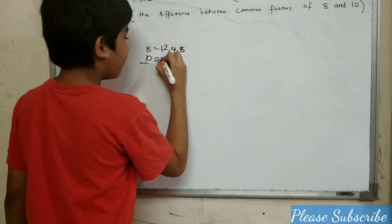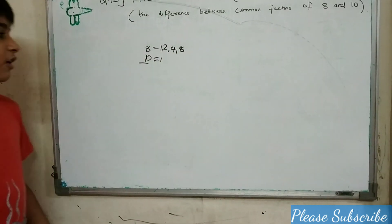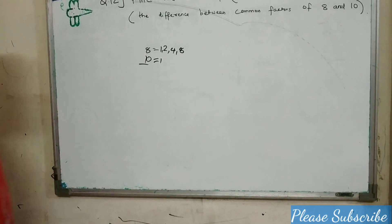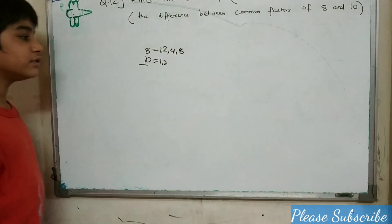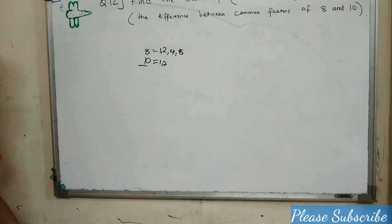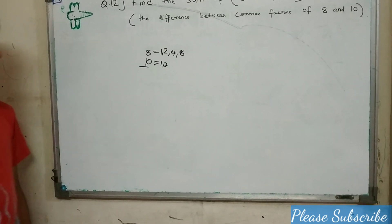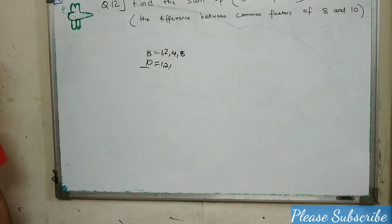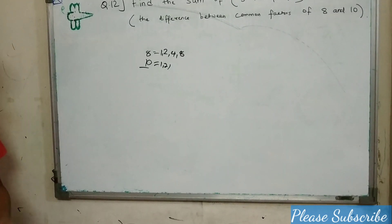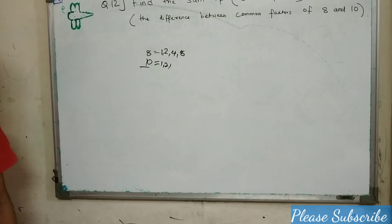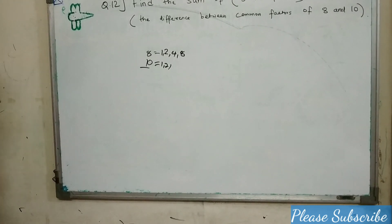1 is a factor of 10 because all numbers are divisible by 1. 2 is also a factor of 10 because 2 times 5 is 10. 3 is not a factor of 10 because 3 doesn't come in 10's table. 4 is also not a factor of 10.